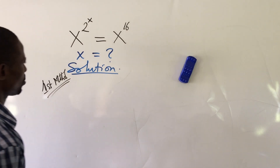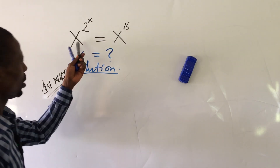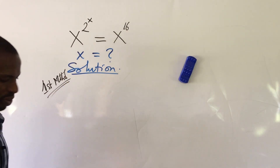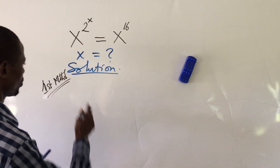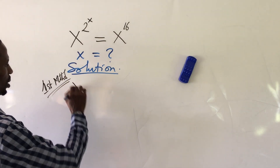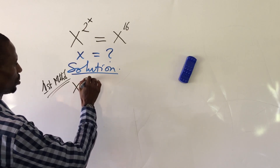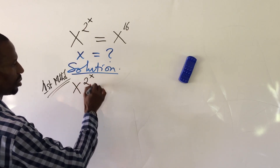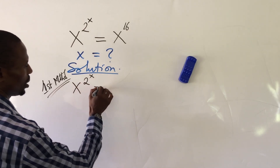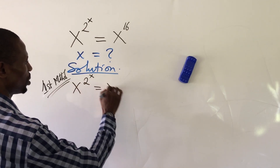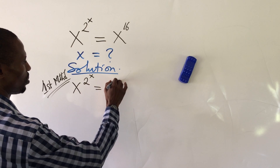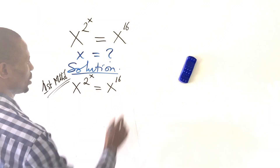In our first method, let's put down the problem first. The question says x to the power of 2, raised to the power of x, equal to x to the power of 16.